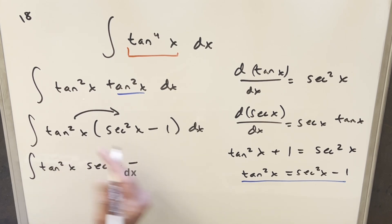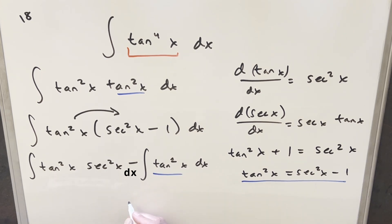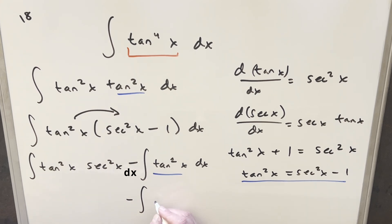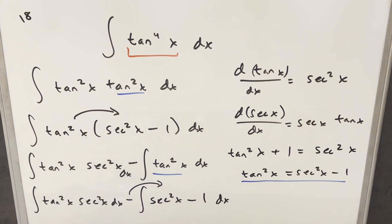The second term is just tan squared x. I can apply the identity one more time to rewrite tan squared x as secant squared x minus 1. Then I can distribute the minus 1 in. Let me clean up the board and we'll continue.